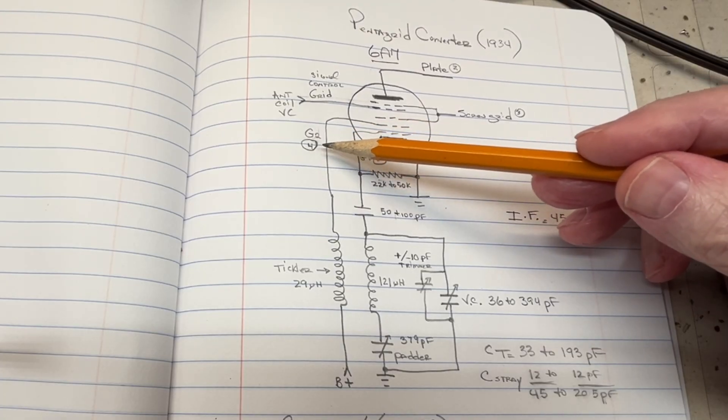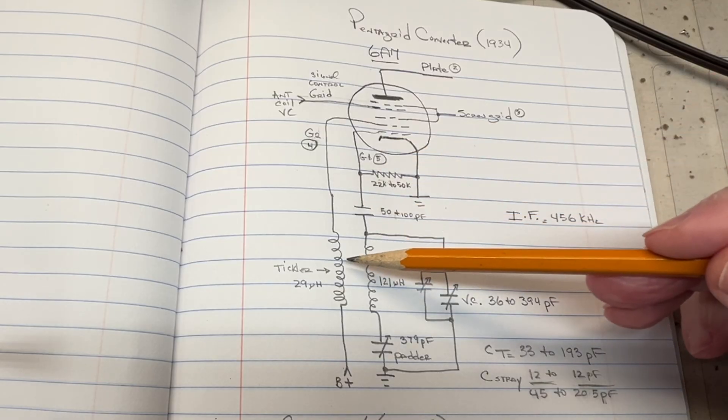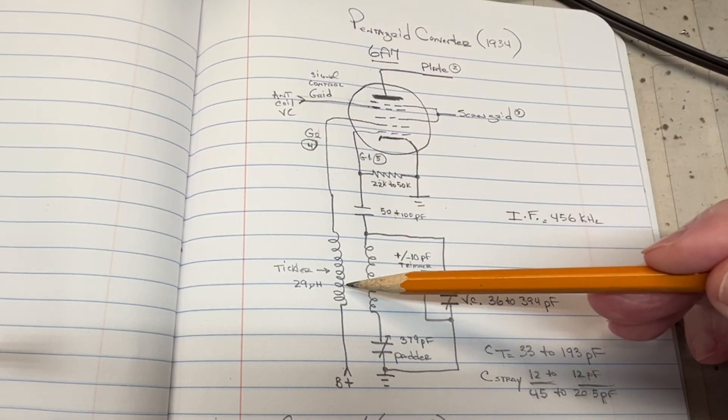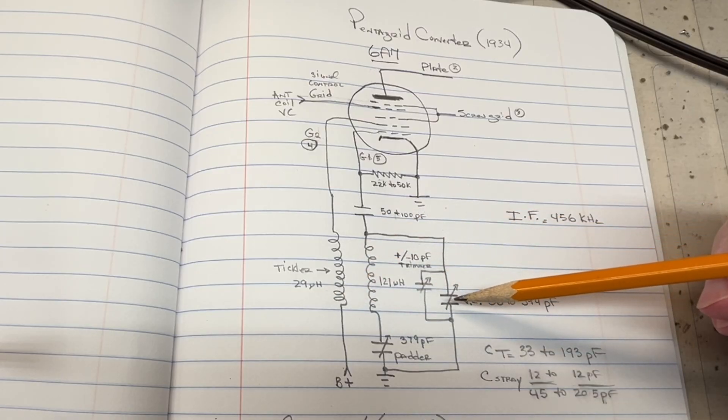and then the magic occurs down here between grid number one and grid number two. Grid number two acts as the plate. You can see that's where the tickler coil attaches. I have the measured inductance there,